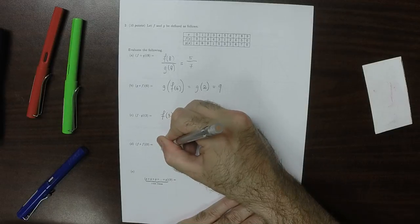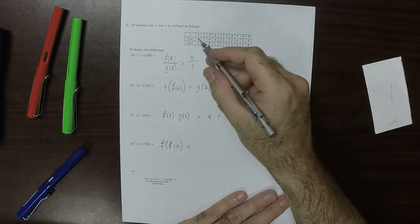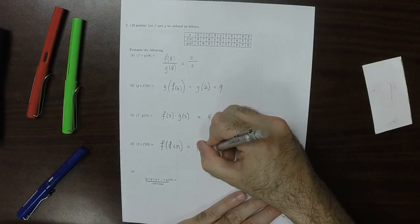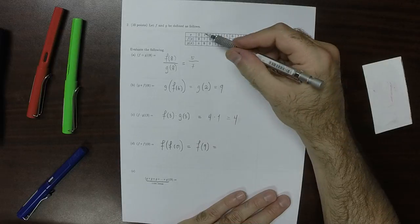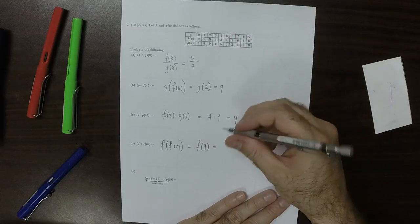This is F evaluated at F of 0. Plugging in 0, you get 9, so this is F of 9. And then plugging in 9, you get 0. That's funny.